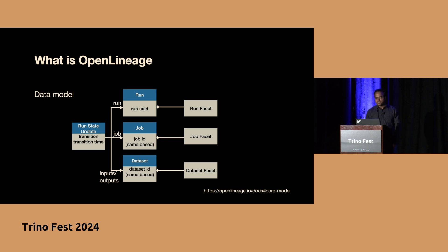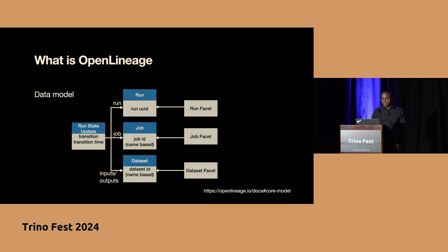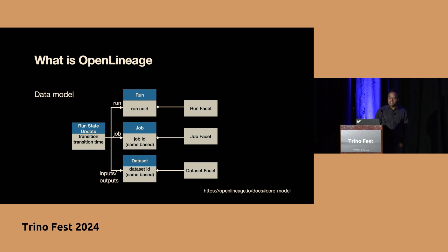A dataset is an abstraction of your data — in Trino, it could be a table or a view. Each of these entities can be further enhanced with the help of facets, which are additional metadata around these building blocks. For example, in the Trino open lineage integration, we take advantage of the SQL job facet, which is a built-in facet from the open lineage library to describe the SQL query that was run.